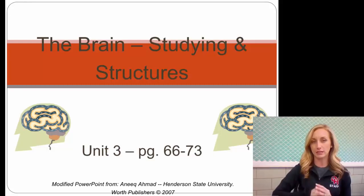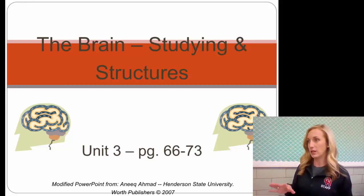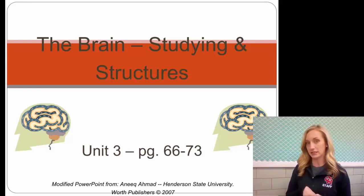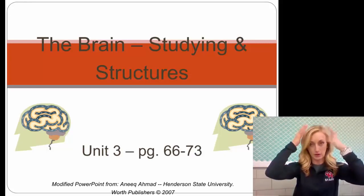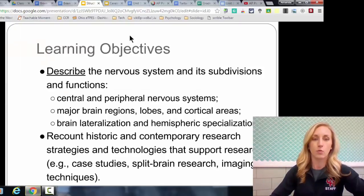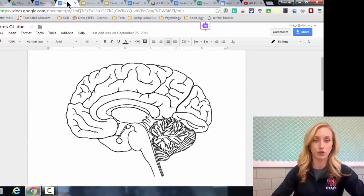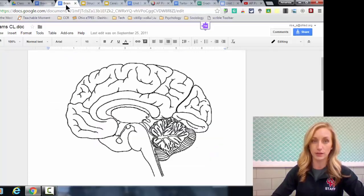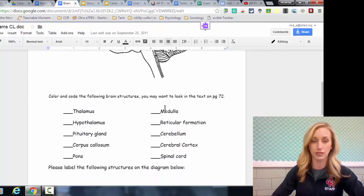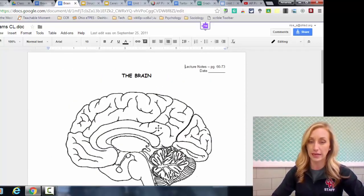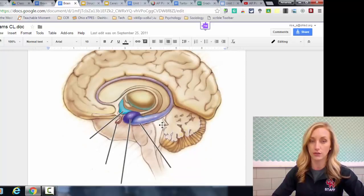We're actually going to have two sets of brain notes: this one being on the more internal and older parts of the brain, and then our next notes being on the outer parts and newer, more evolved parts of the brain. Let me quickly show you what sets of notes you should be looking at. This is your chart where you're going to write down the function of each of these brain structures, but you also have these images that you need to label — and I'd prefer that you color them so you can see right on the brain what the different parts are.